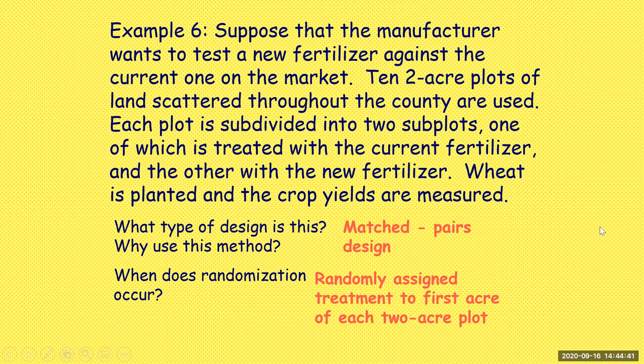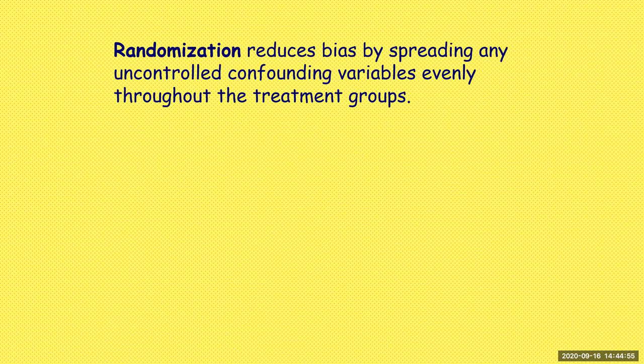When does randomization occur? We randomly assign which treatment goes to the first acre of each two-acre plot; the new fertilizer then goes on the other plot. Randomization reduces bias by spreading any uncontrolled confounding variables evenly throughout the treatment groups.